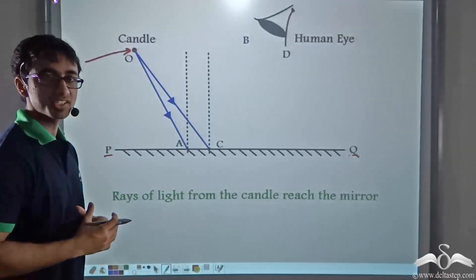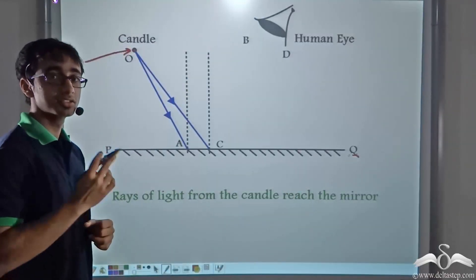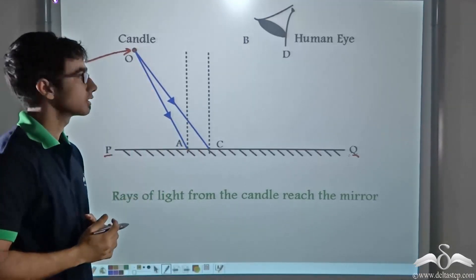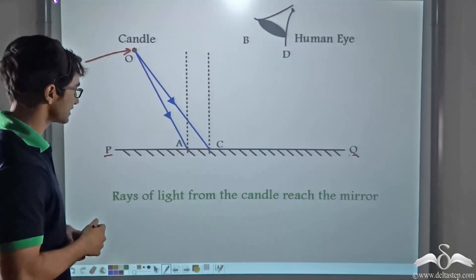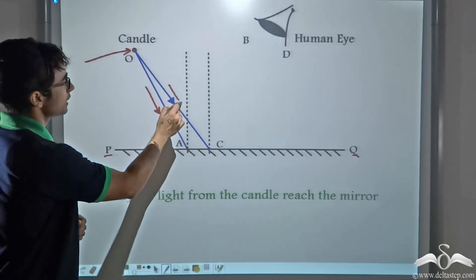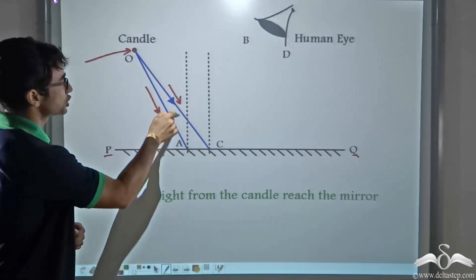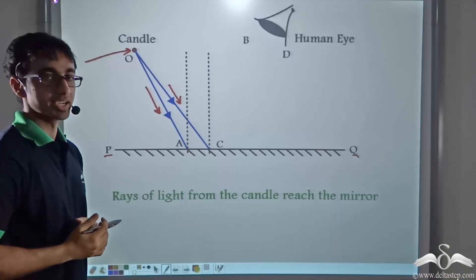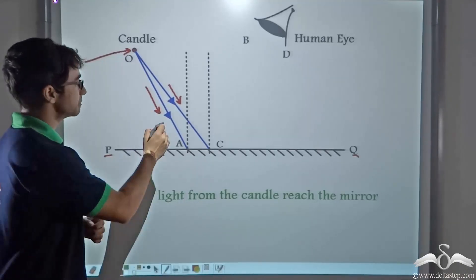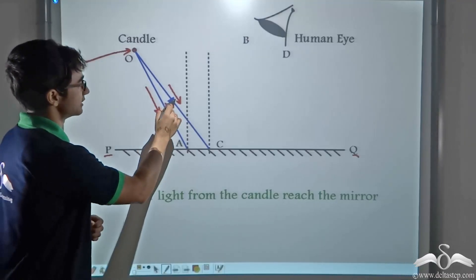So to form an image, we are going to need at least two rays coming from the candle onto the mirror. These rays have been depicted by these two arrows. These two rays are the incident rays because they are coming from the candle and they are hitting the mirror as depicted by these arrowheads.